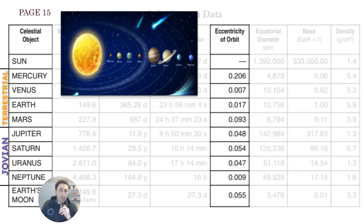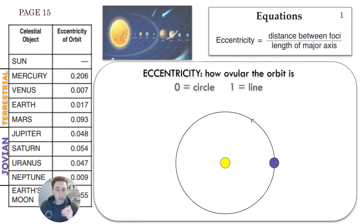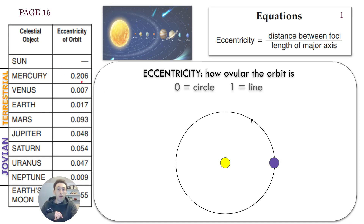The eccentricity of the orbit — the planets do not have a circular orbit around the sun; they have an eccentric orbit. Eccentricity is how ovular the orbit is: zero would be a circle, and one would mean it's a straight line. The planets are close to zero — values like 0.017 and 0.093. Mercury has the greatest eccentricity, meaning it's the most ovular in its orbit. The equation is on page one of the reference table: eccentricity equals the distance between the foci over the length of the major axis.